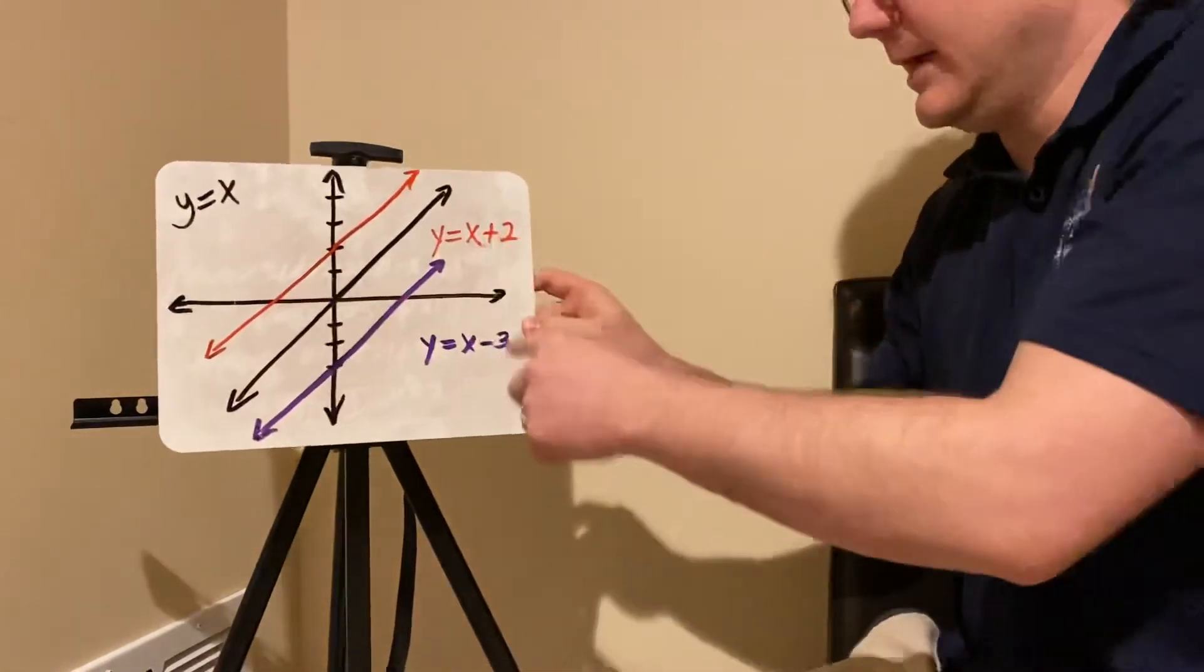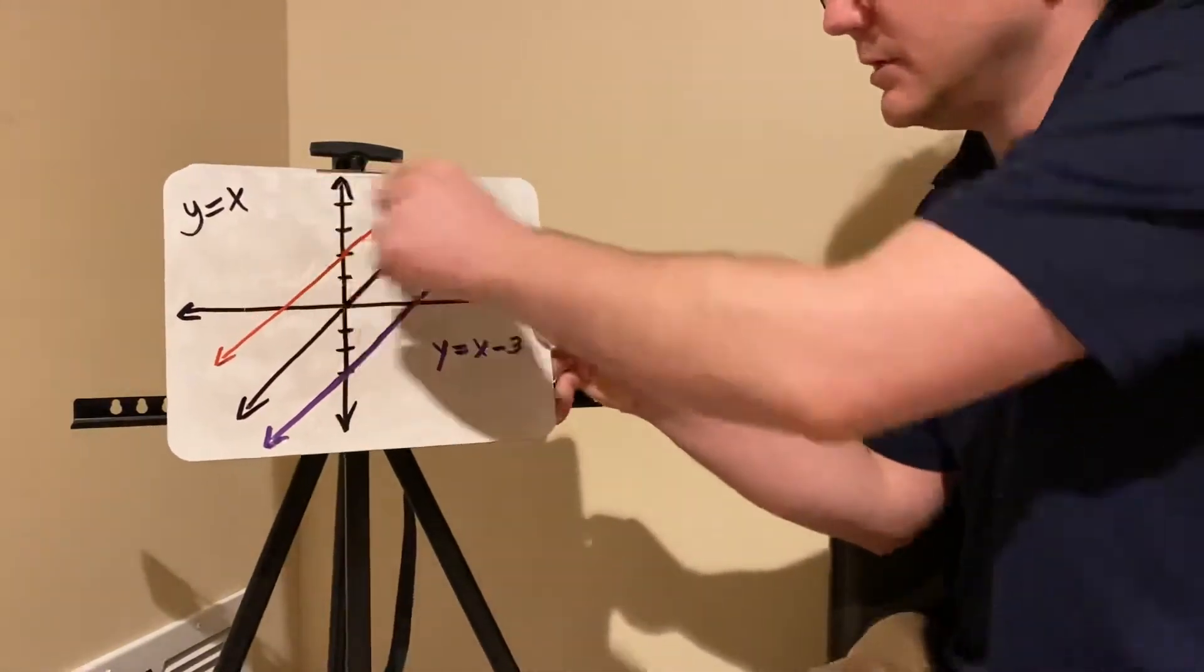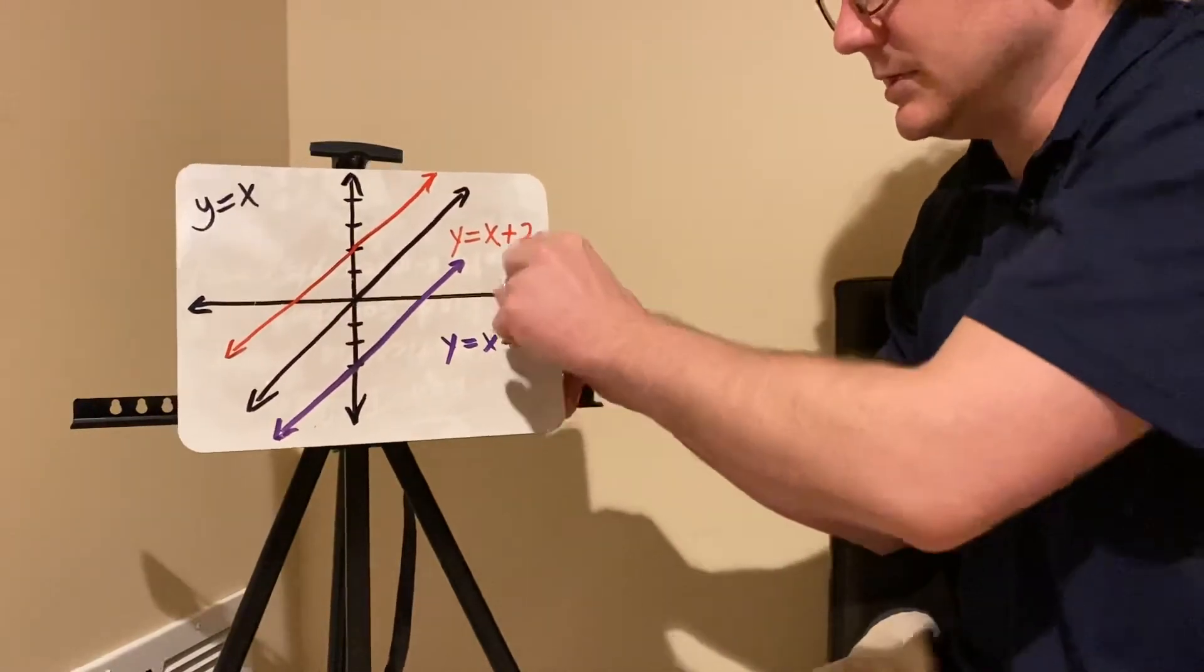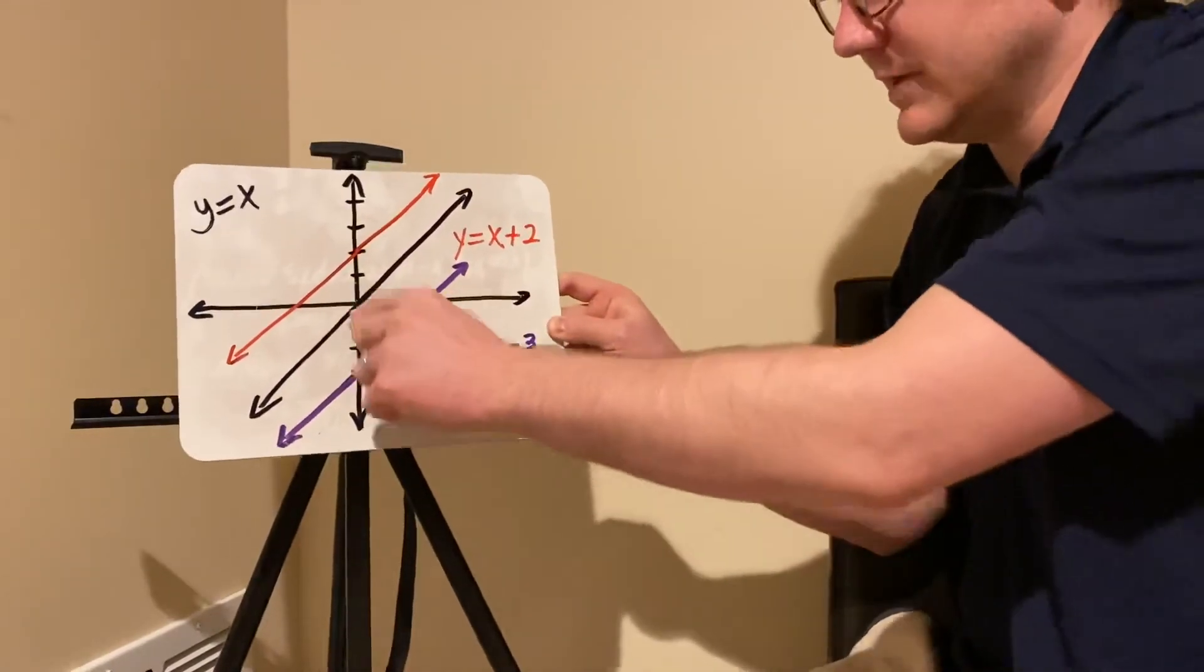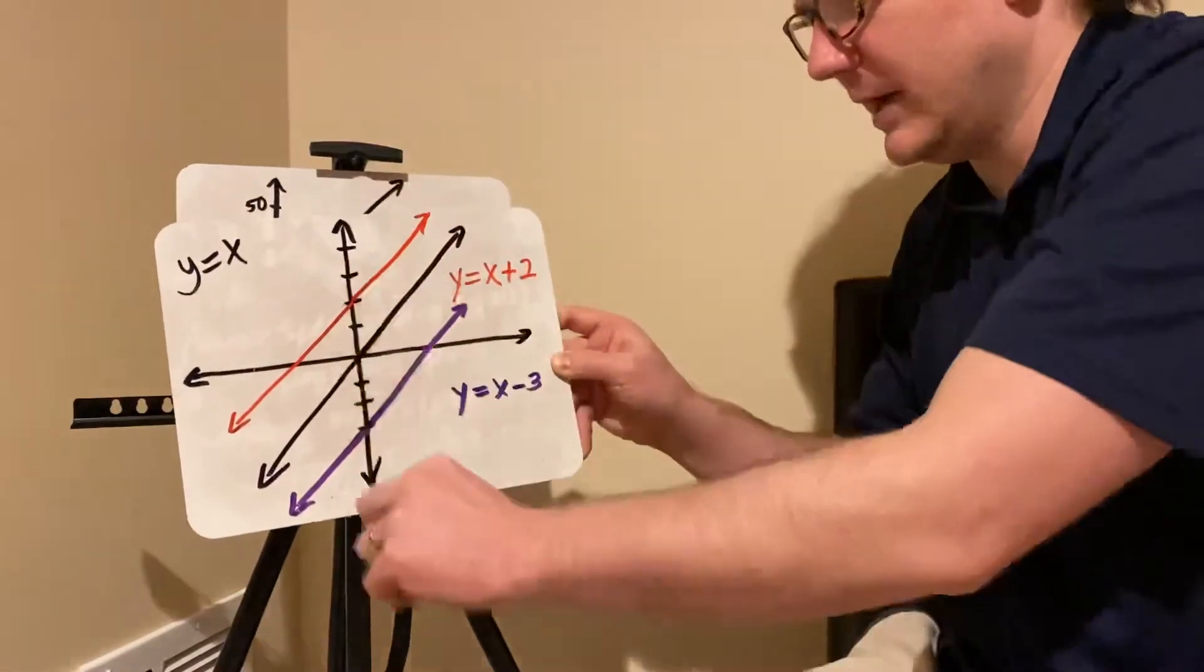So just note that the b portion here, the added part or subtracted part, is your y-intercept. And it also basically is just shifting the line up and down the y-axis.